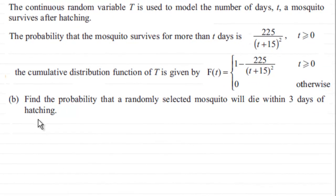Now in part B of this question we're asked to find the probability that a randomly selected mosquito will die within three days of hatching. Give you a moment just to try this if you haven't given it a go already, and I'll show you the work solution when you come back.